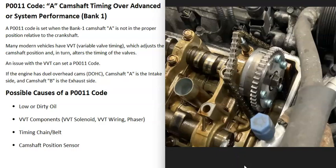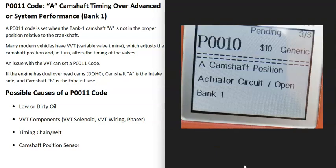Usually if there is some kind of problem with the variable valve timing component, you're going to get another code. For example, if you also got a P0010 code — camshaft position actuator circuit open bank one — then it's a good idea to go test that variable valve timing solenoid, check out the wiring, the phaser or the actuator.